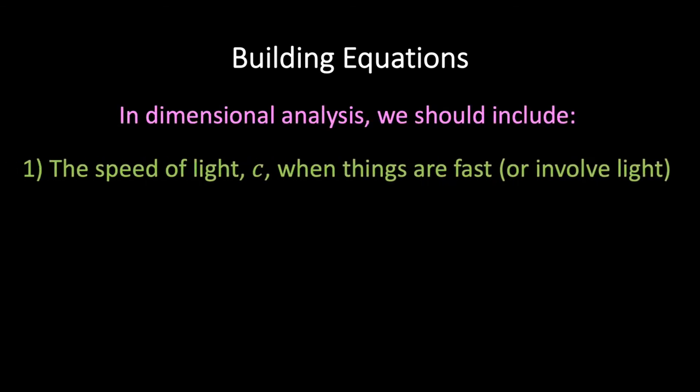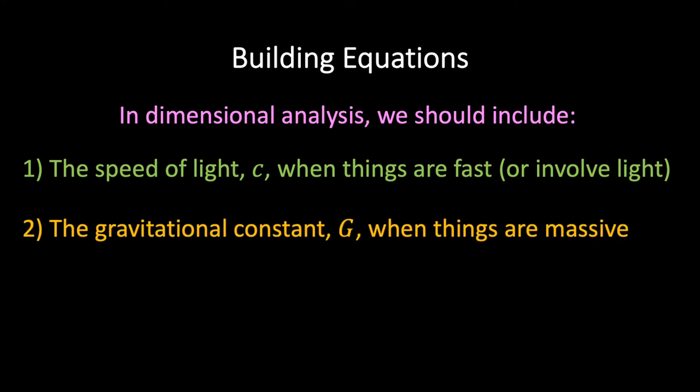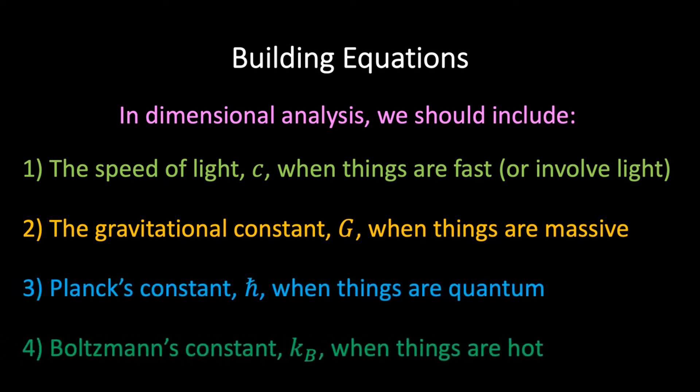Having laid the necessary foundations, we're now in a position to start building equations using the fundamental constants as our building blocks. The rules of the game are as follows: when using dimensional analysis to construct equations, we should include the speed of light c when things are moving fast or involve light. We should include the gravitational constant G when things are massive. We should include Planck's constant when dealing with quantum systems, and we should include Boltzmann's constant when things are hot.